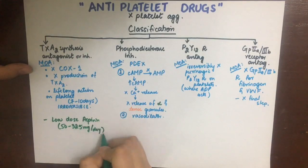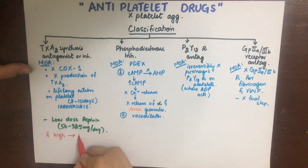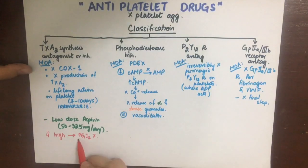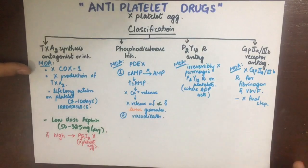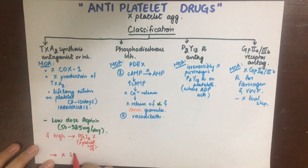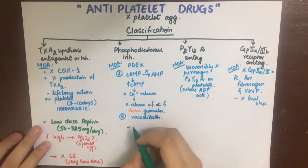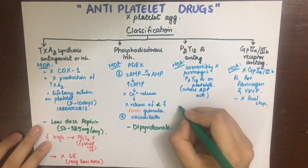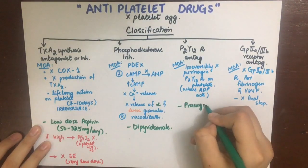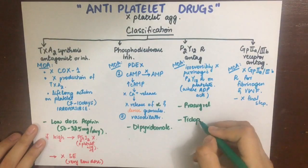The thromboxane A2 synthesis inhibitor is low-dose aspirin, between 50 to 325 milligrams per day. If a high dose is used, PGI2 (prostacyclin) will also be inhibited — and since prostacyclin inhibits platelet aggregation, we do not want to inhibit it. Such low doses hardly produce the side effects associated with aspirin. The drug used as a phosphodiesterase inhibitor is dipyridamole.